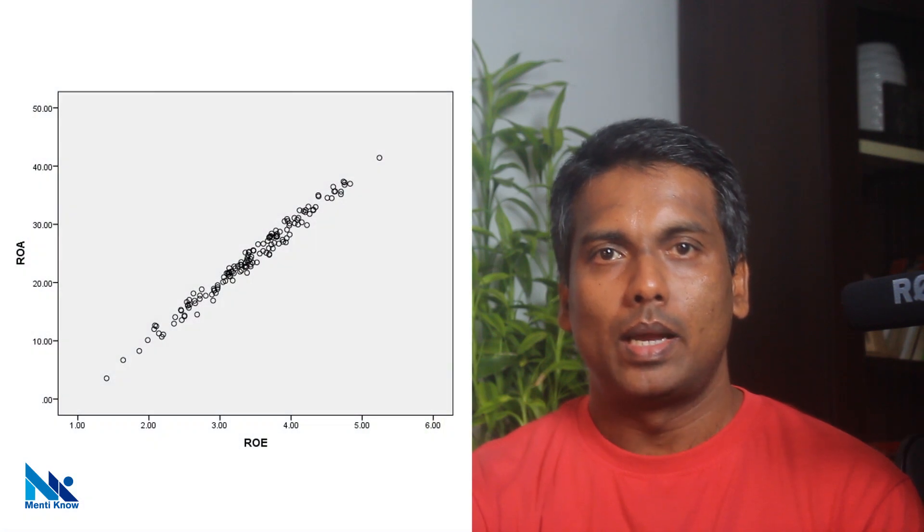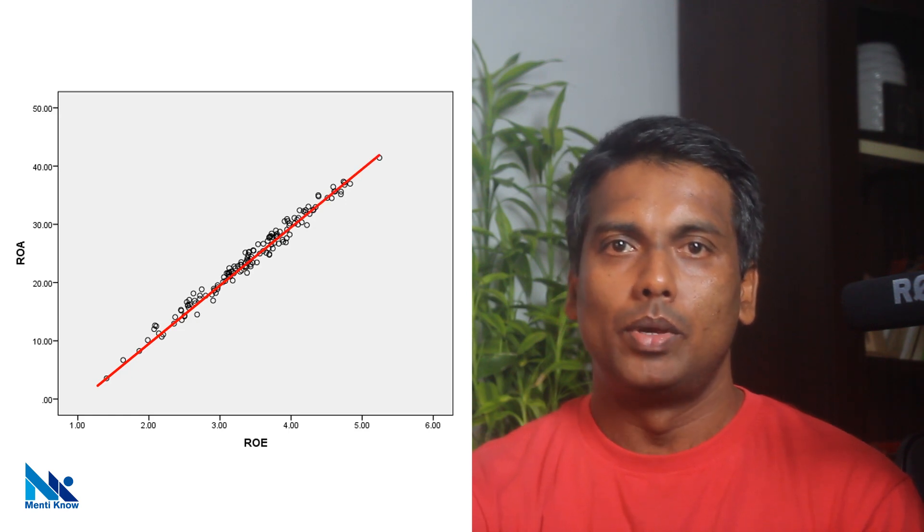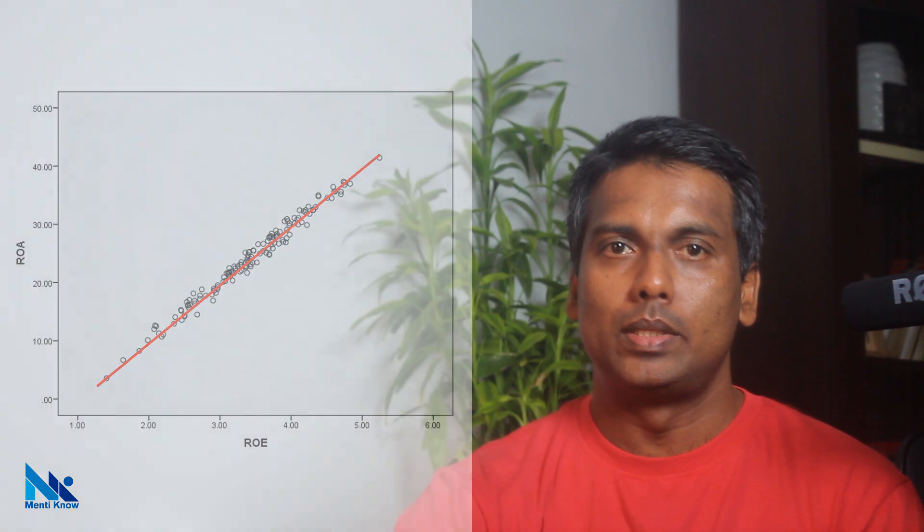Because we cannot change the independent variable while holding the other independent variable constant. For example, assume that I have both return on assets and return on equity as independent variables in my regression. We know that it is not usually possible to increase ROA while holding the ROE constant because they are highly correlated with each other.